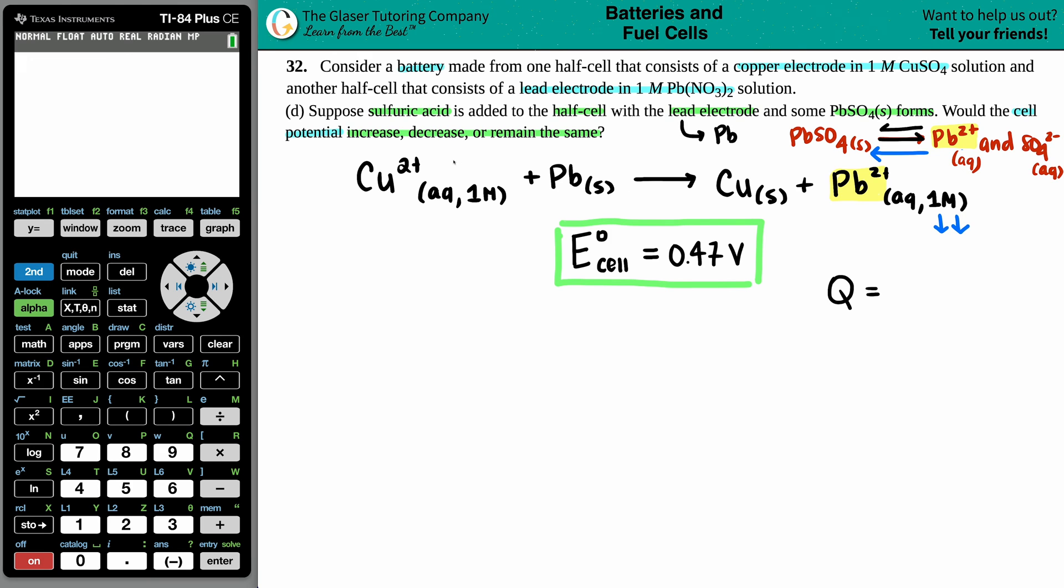Now for this balanced equation, remember Q's are always products divided by reactants, no solids allowed. So I don't care about this one. And I don't care about this one. It's just these two aqueous substances, right? So technically, it would be the concentration of Pb2+ divided by the concentration of Cu2+.